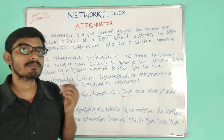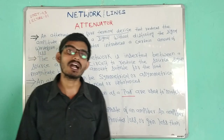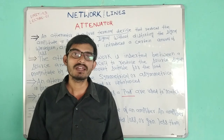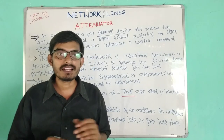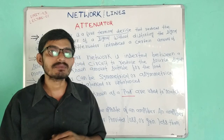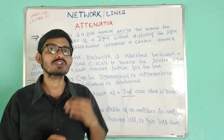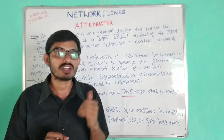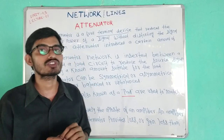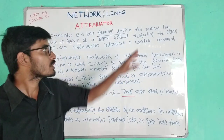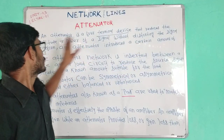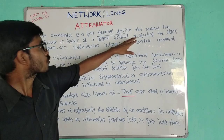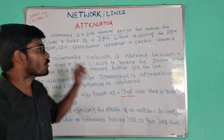An attenuator is an electrical network which attenuates — meaning the signal is lost or reduced — without distorting the signal waveform.